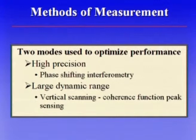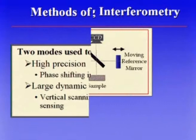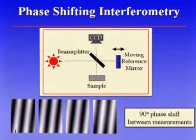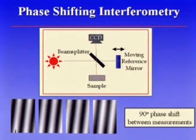In phase shifting interferometry, we take several interferograms — at least three, and for my example, four. We have these interference patterns falling on a CCD array, and we move the reference mirror, which causes the fringes to shift. We read out three or more of these patterns. Typically, we have a quarter of a fringe shift between consecutive interferograms, which corresponds to a change in phase of the two beams of 90 degrees.